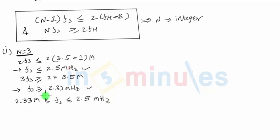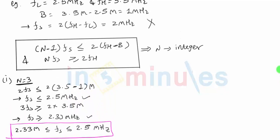That means my fs must lie between 2.33 megahertz and 2.5 megahertz, considering the values of 2.33 and 2.5 because there's an equality sign. So as you can see, I can definitely not use fs equal to 2 megahertz because we had ruled it out before.